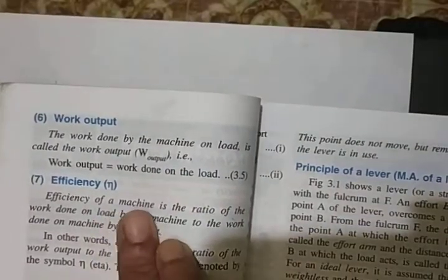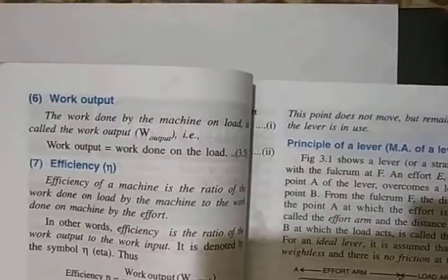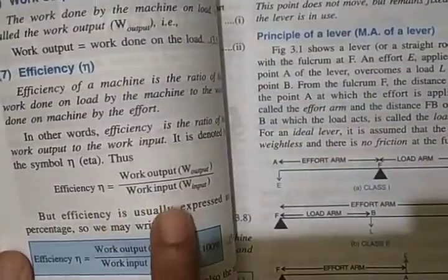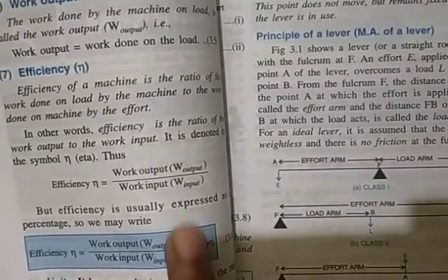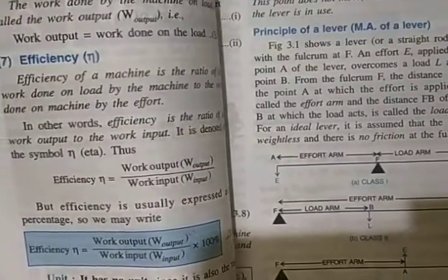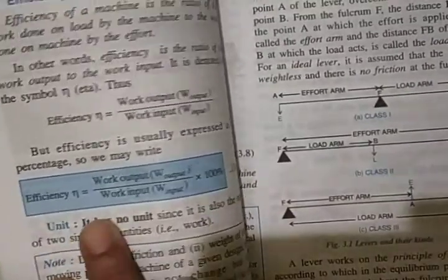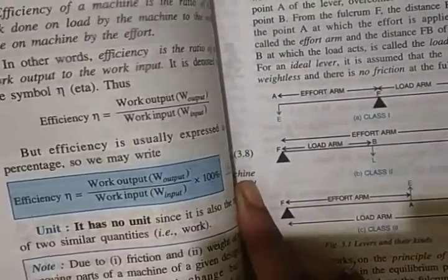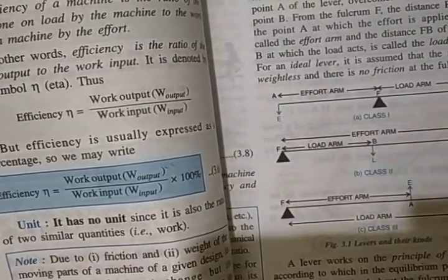The next term is efficiency. Efficiency is work output upon work input. Usually it is expressed in percentage, so it will be work output upon work input multiplied by 100, and it has no units.